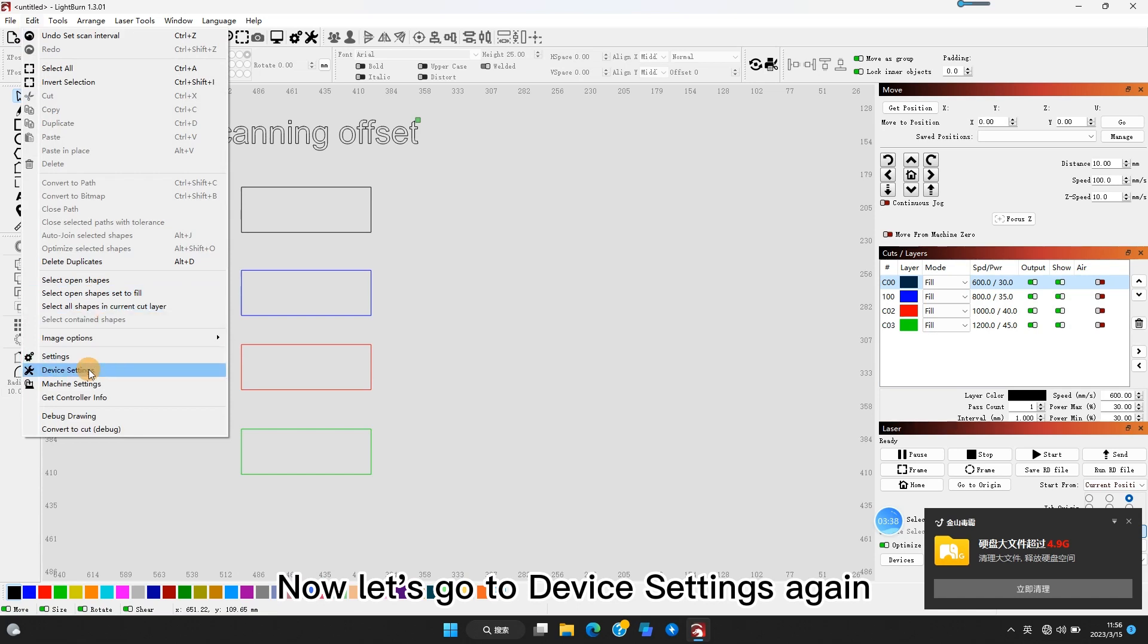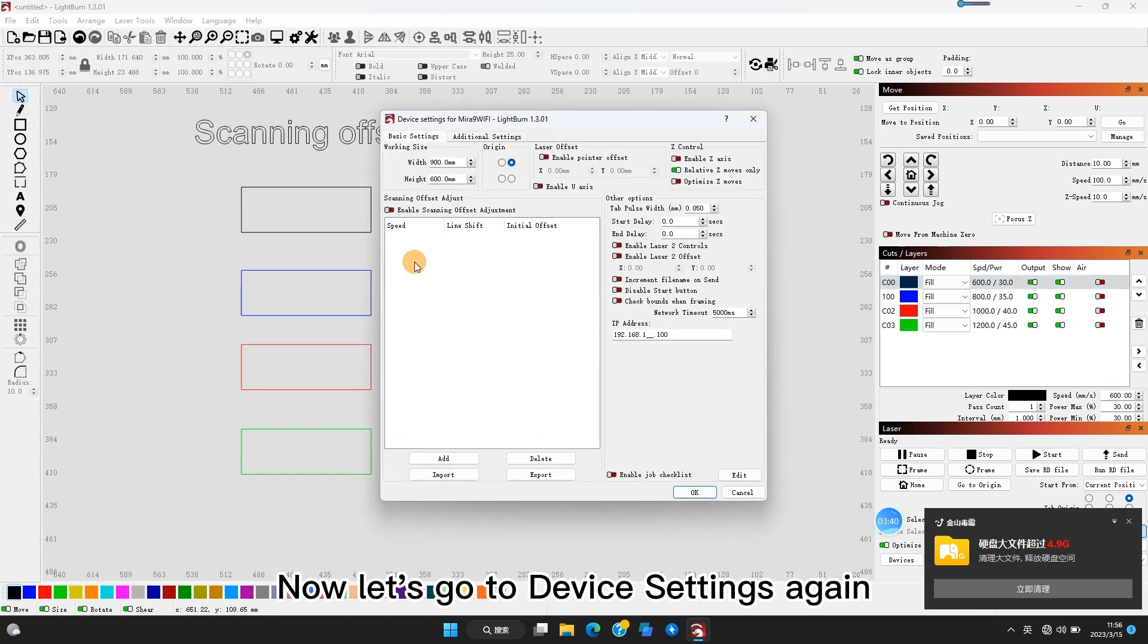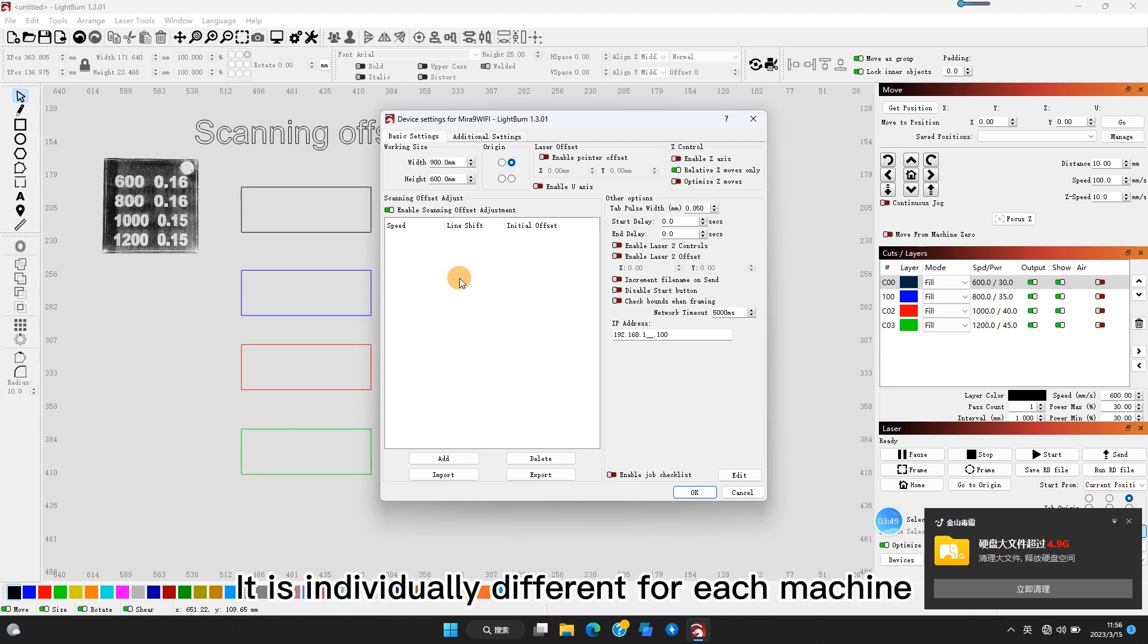Now let's go to device settings again. About the scanning offset parameter, I can't give you a fixed value to apply in your machine. As I said, it's individually different for each machine.